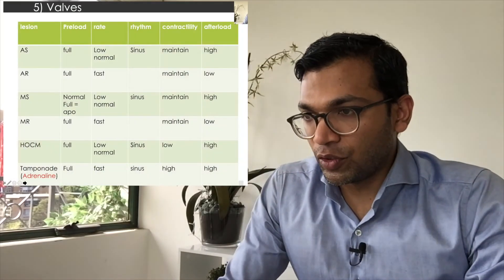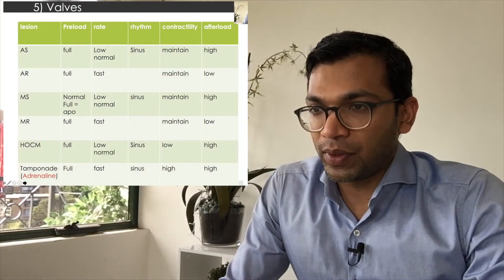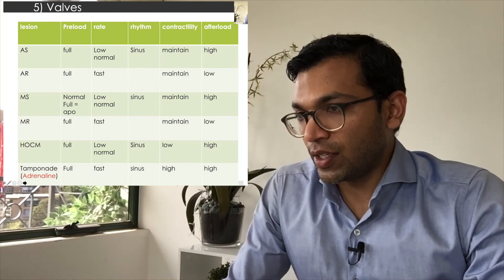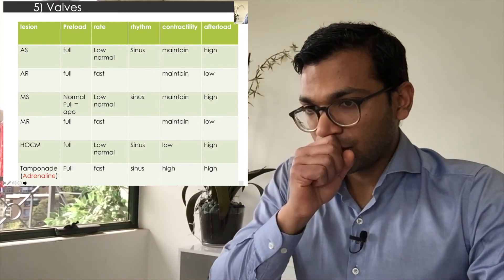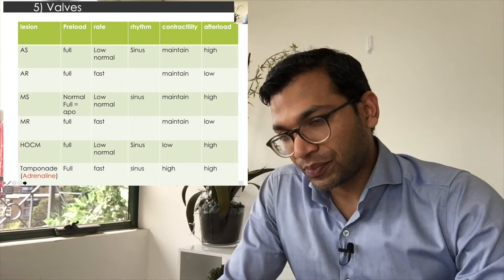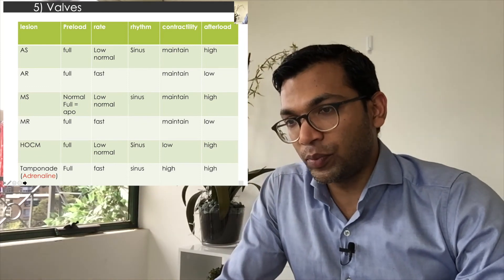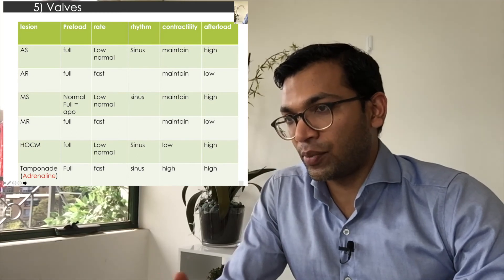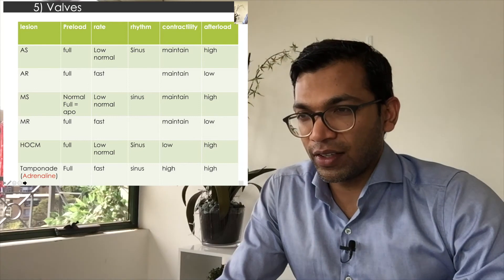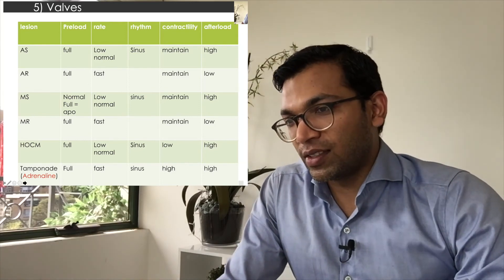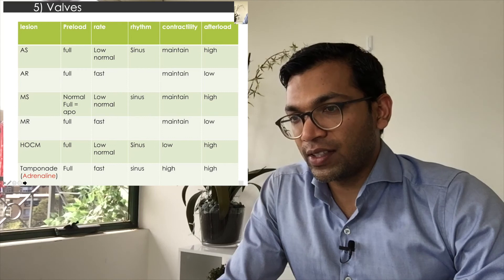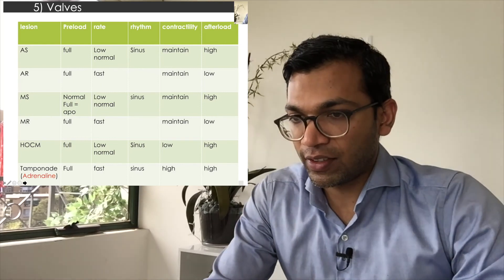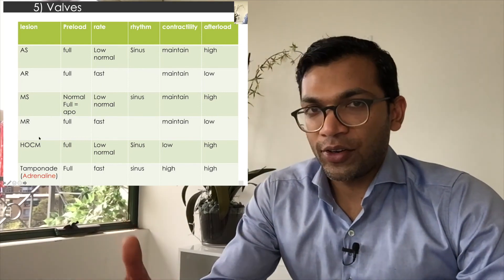For mitral regurgitation: full preload, fast rate, sinus rhythm not critical, maintain contractility, and low afterload — all supporting forward flow. Mitral stenosis differs: unlike aortic stenosis where you want full preload, too much fluid in mitral stenosis — such as in pregnancy — can precipitate pulmonary oedema. So target normal preload, low-normal rate, sinus rhythm is ideal, maintain contractility, and higher afterload.